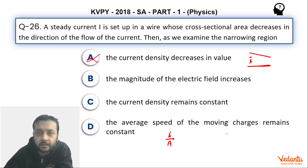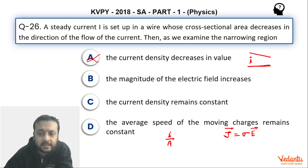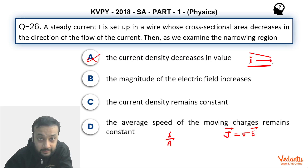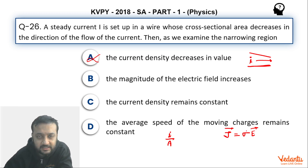Option B says magnitude of electric field increases. Using the microscopic form of Ohm's law, current density j equals sigma times E, meaning current density at any point equals conductivity times electric field. As we move in the forward direction, current density is increasing. Sigma is a property of the material and remains constant. Hence, if j is increasing, electric field will also increase. So option B is correct.